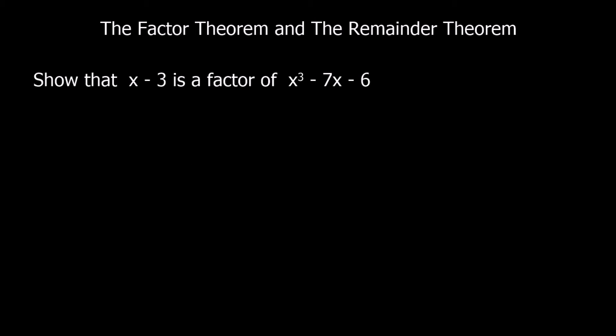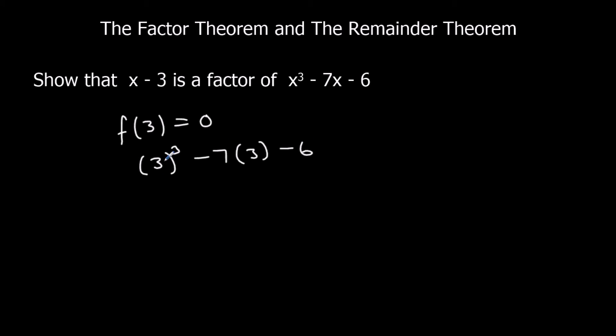Show that x minus 3 is a factor of x cubed minus 7x minus 6. If x minus 3 is a factor, then f(3) must equal 0. So: 3 cubed minus 7 times 3 minus 6. That's 27 minus 21 minus 6. 27 minus 21 is 6, take away another 6 is 0. So x minus 3 is a factor because f(3) equals 0.